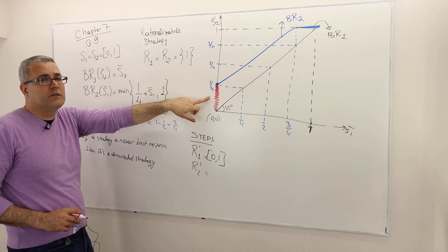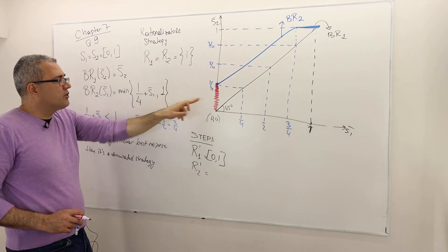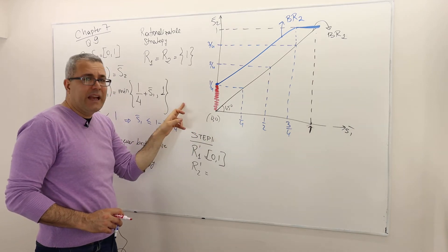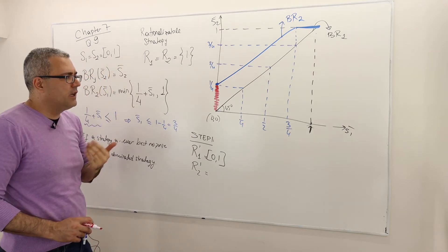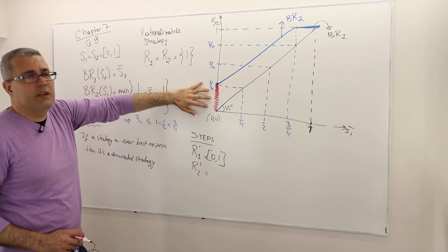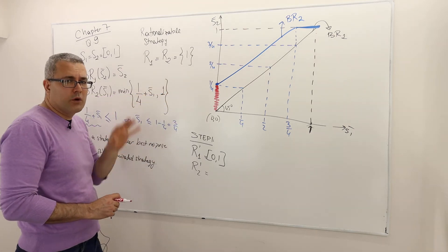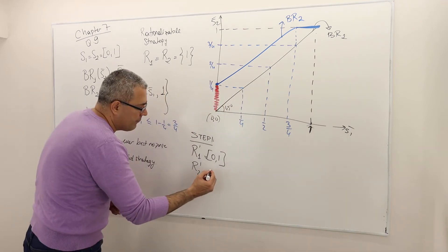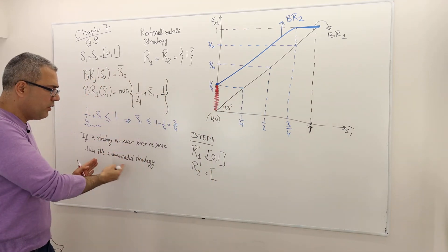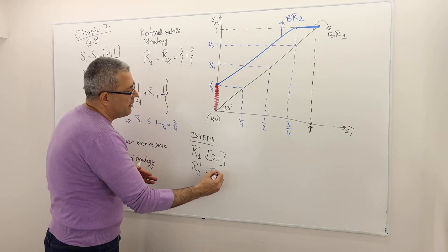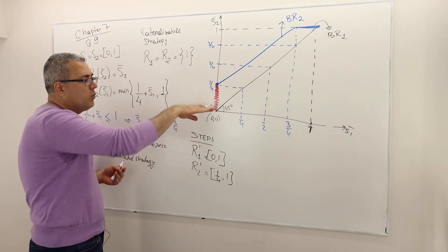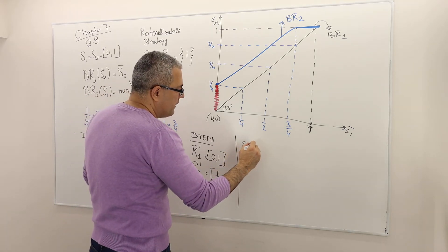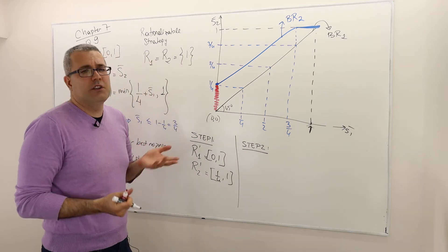For example, if player 2's strategy is 0.1, there's no s1-bar in [0,1] that makes it a best response — it would only be optimal if s1-bar were negative, which is not allowed. So player 2 will never play strategies in [0, 1/4). Those strategies are strictly dominated. Player 2 will play something in [1/4, 1] after step 1.